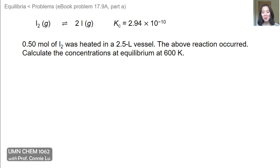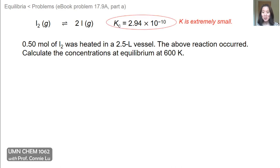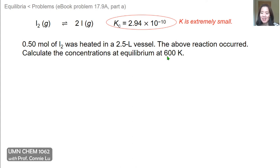I'd like to show you two cases where you can skip the quadratic formula and solve for X much more simply. These cases arise when the equilibrium constant is either extremely small or extremely large. Here's an example where K is extremely small — 10 to the minus 10. The chemical reaction is iodine I₂ breaking apart into two individual iodine atoms. The problem states 0.50 moles of iodine was heated in a 2.5 liter vessel — calculate the concentrations at equilibrium at 600 K.